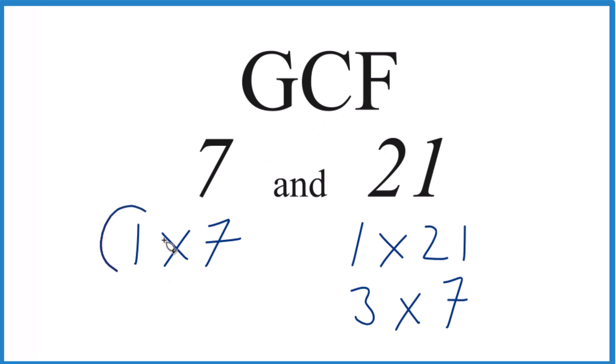So the common factors, 1 is in common between both numbers here, 7 and 21. But 7 is in common as well, and it's greater, and it's the greatest common factor. So in answer to our question, the greatest common factor for 7 and 21 is just going to be 7.